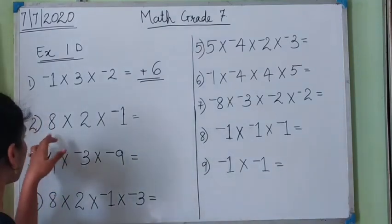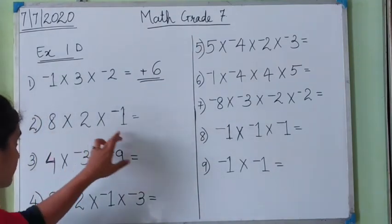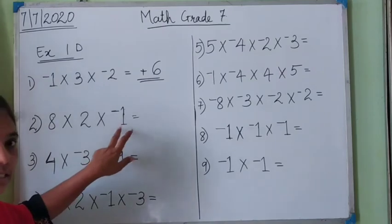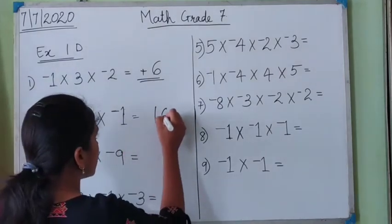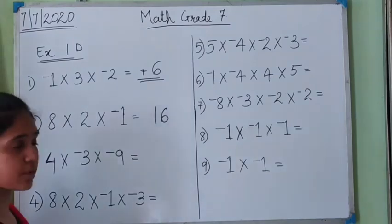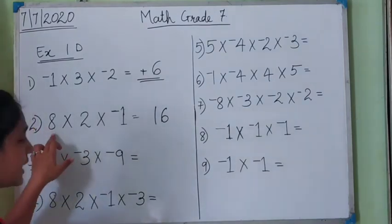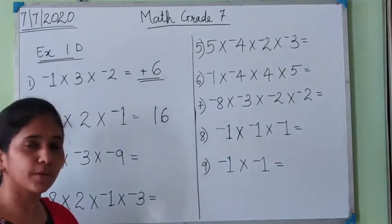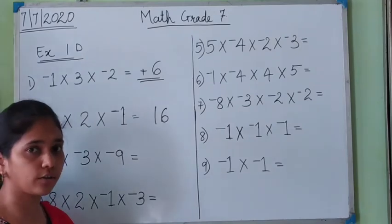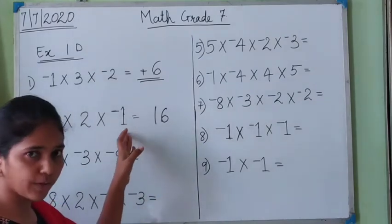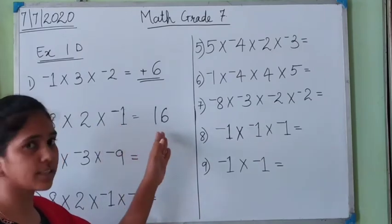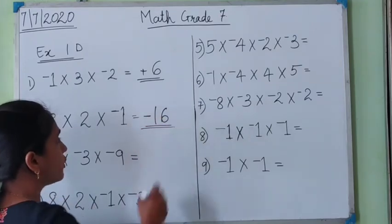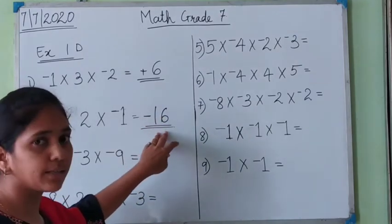In the second example, 8 into 2 is 16, and 16 into 1 is 16. Now we check the number of negative numbers: 8 is positive, 2 is positive, only 1 is negative. So there is only one negative number. One is odd, so if an odd number of negative numbers are multiplied, the final answer will be negative. The answer is negative 16.